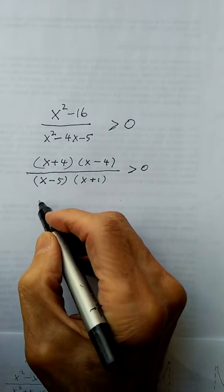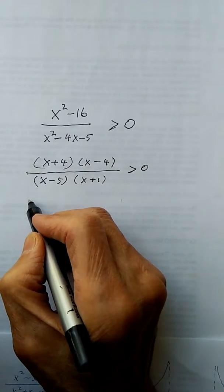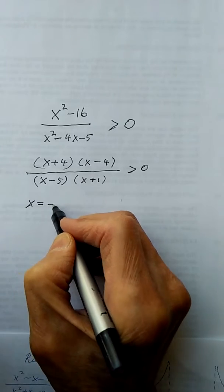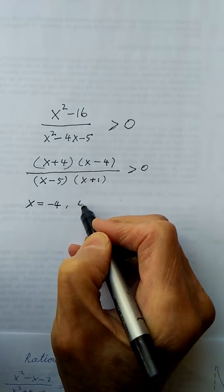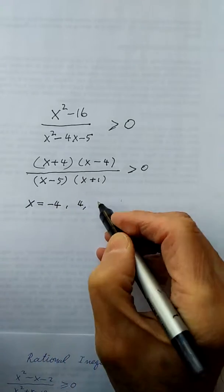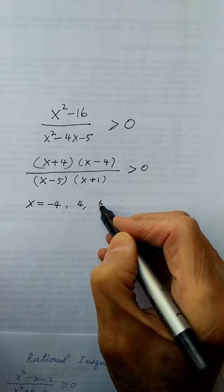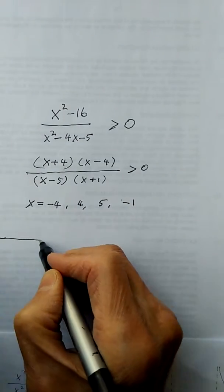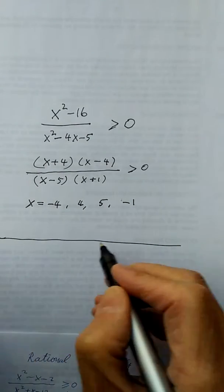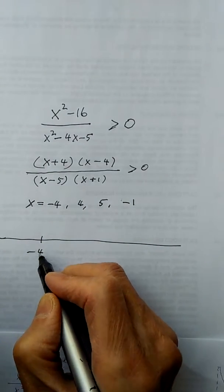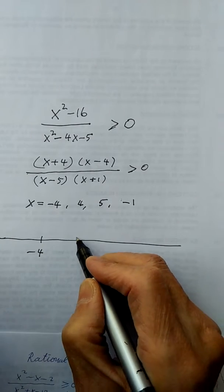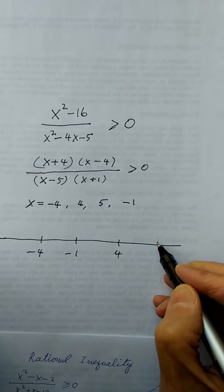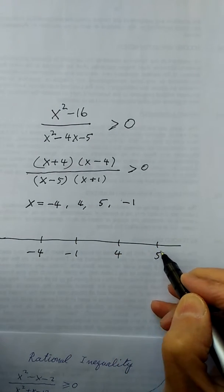Next, write down the zeros: x equals negative 4, positive 4, positive 5, negative 1. Draw a number line and mark them: negative 4, negative 1, 4, and 5.